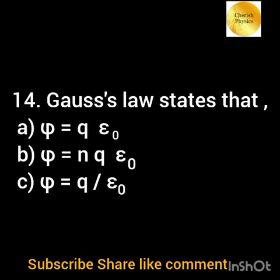Gauss's law states that: option a) φ = q × ε₀; option b) φ = nq ε₀; option c) φ = q / ε₀.